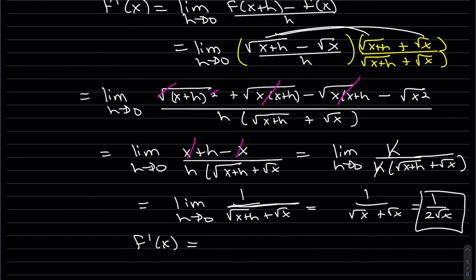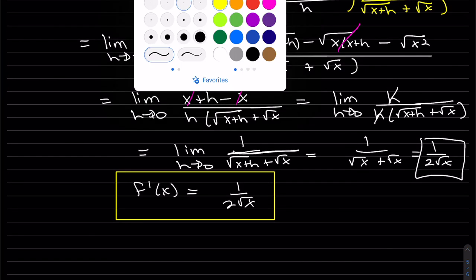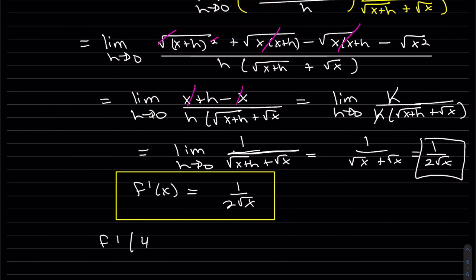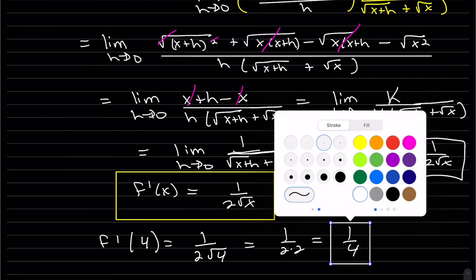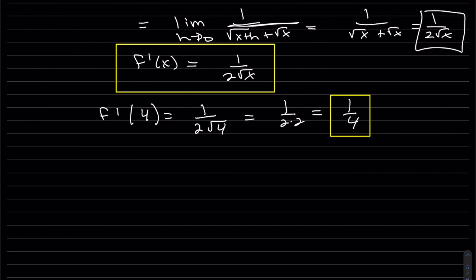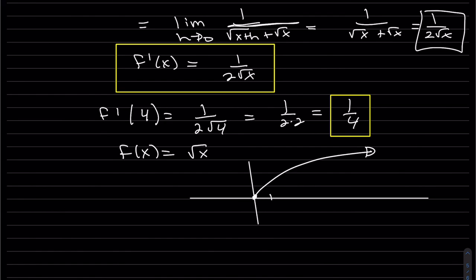Now we can plug in h equals zero and we won't have zero over zero anymore. After all that work, plugging in h = 0 gives the derivative. Sketching the function: starting at one, two, three, four, it flattens out — it's not rising very fast because the derivative is one-fourth. And there you have it. Thanks for watching.